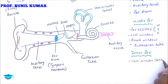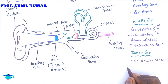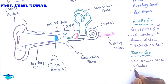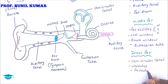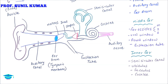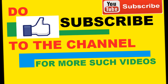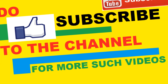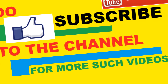The inner ear includes the semicircular canal, utriculus and sacculus — together called the otolith's organ — and the cochlea, which is connected to the auditory nerve. Hope friends you have understood the concept of the ear. Don't forget to give a like to the video, and if you are new, do subscribe. Thank you very much.